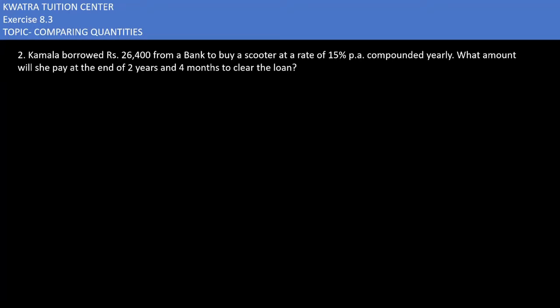Let's start with question number 2 here. It says Kamla borrowed 26,400 from a bank to buy a scooter at a rate of 15% per annum compounded yearly.